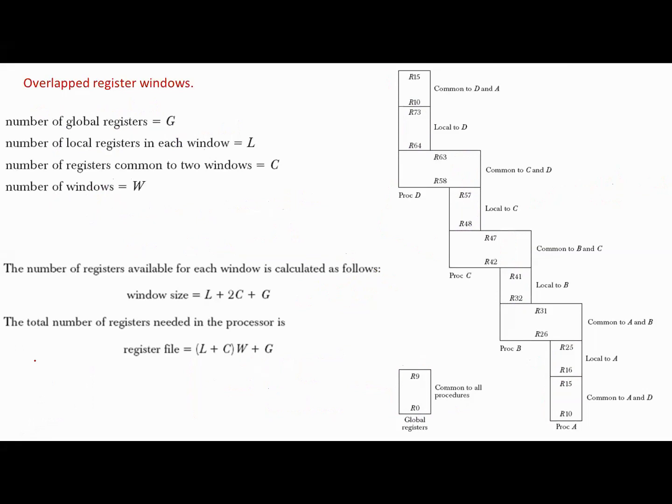If the number of global registers is G and the number of local registers in each window is L, and the number of registers common to two windows is C, and the number of windows is W, then the number of registers available for each window is calculated as follows: window size equals L plus 2C plus G. And the total number of registers needed in the processor or the register file equals L plus C multiplied by W plus G.